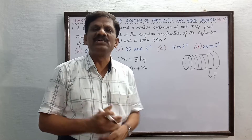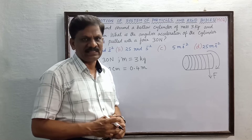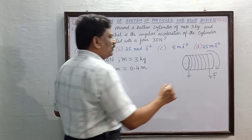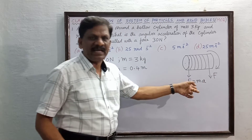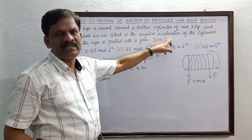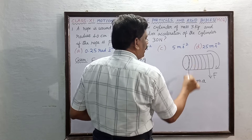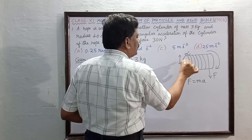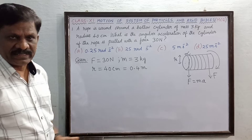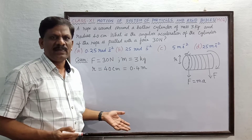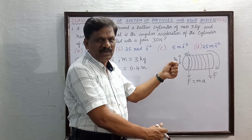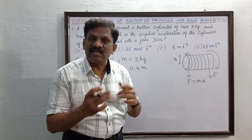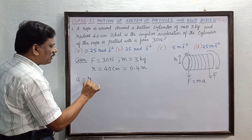Now we have to find the relationship between the linear acceleration and the angular acceleration, because the force is tangential to the circle - it is a linear force. So this force F is equal to mass into linear acceleration A. But what is asked here is the angular acceleration alpha. If radius of this cylinder is R, then the relationship between linear acceleration and angular acceleration is: A is equal to R times alpha. This is equation 1.